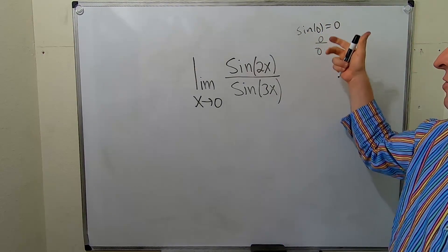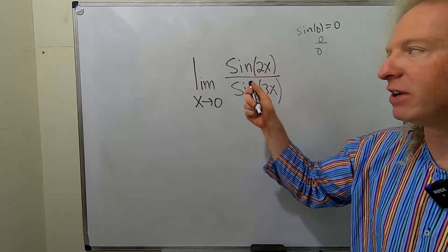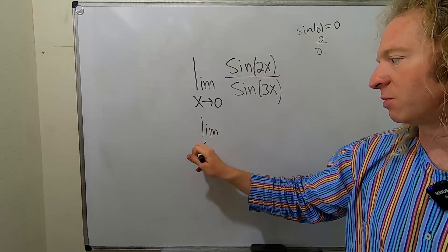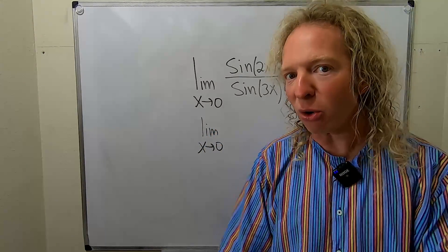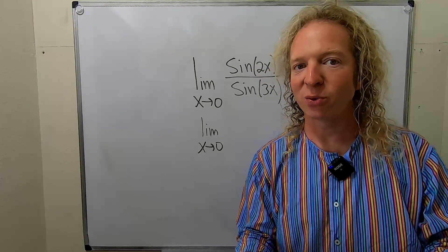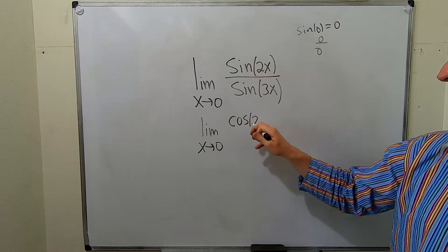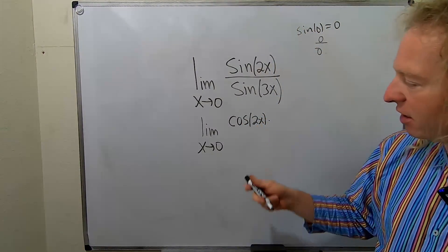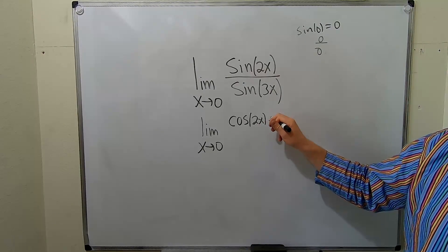L'Hopital's Rule says that when you have 0 over 0 or infinity over infinity, you can just take the derivative of each piece. So, this is the limit as x approaches 0. The derivative of sin is cosine, but here it's sin(2x). So, we have to use the chain rule. It's cosine of 2x times the derivative of the inside piece. The inside piece is 2x. The derivative of 2x is 2.